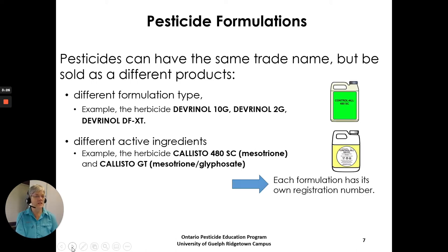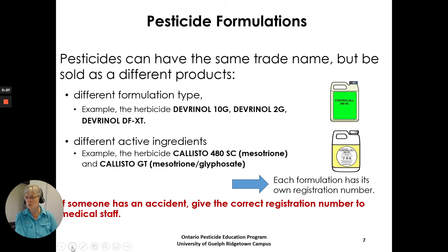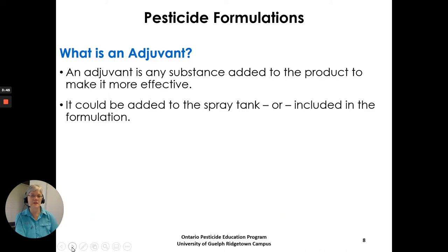Each formulation has its own registration number. If someone has an accident, give the correct registration number to the medical staff, because the product name alone can be confusing. If you only said 'Callistyl,' they wouldn't know which product it was, and that makes a difference with the active ingredients.